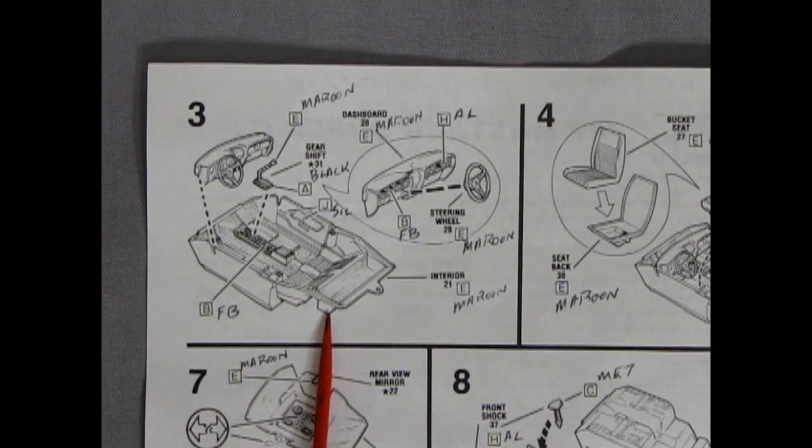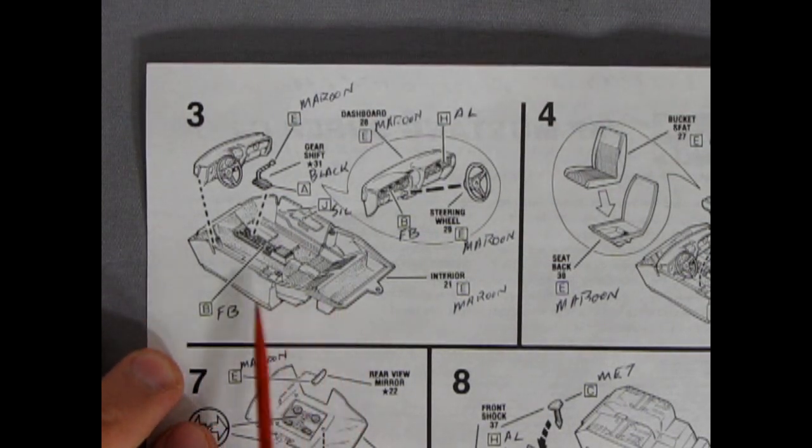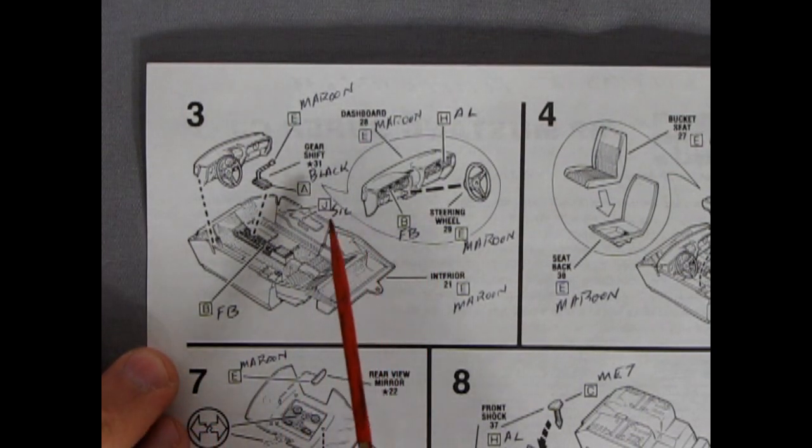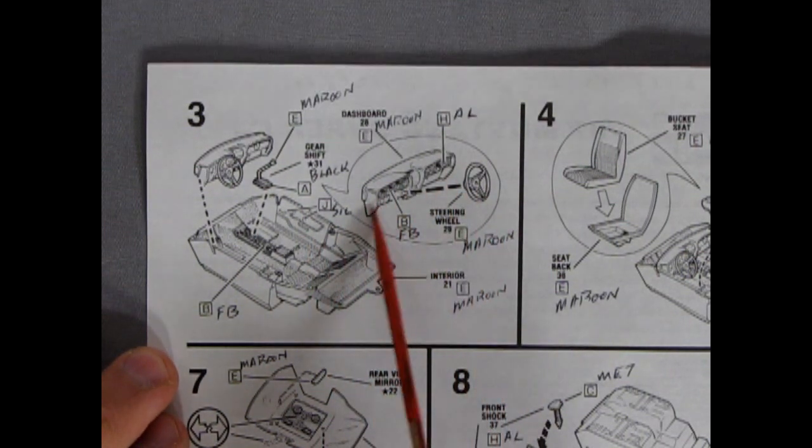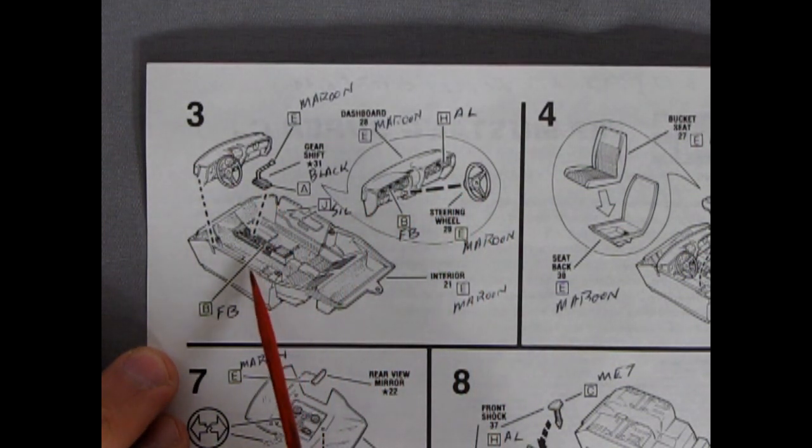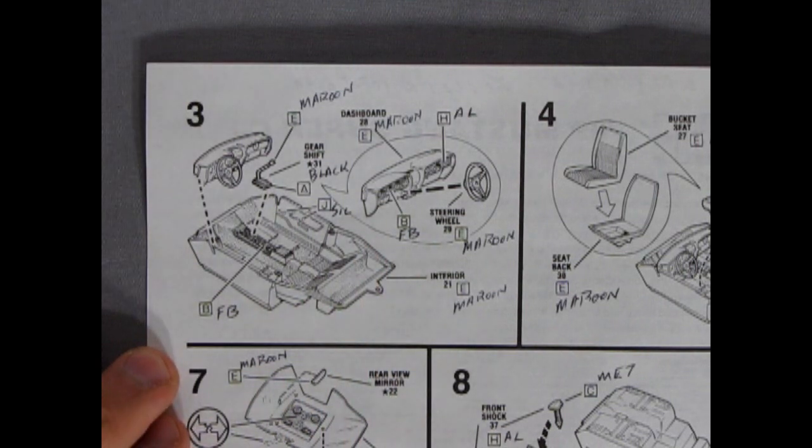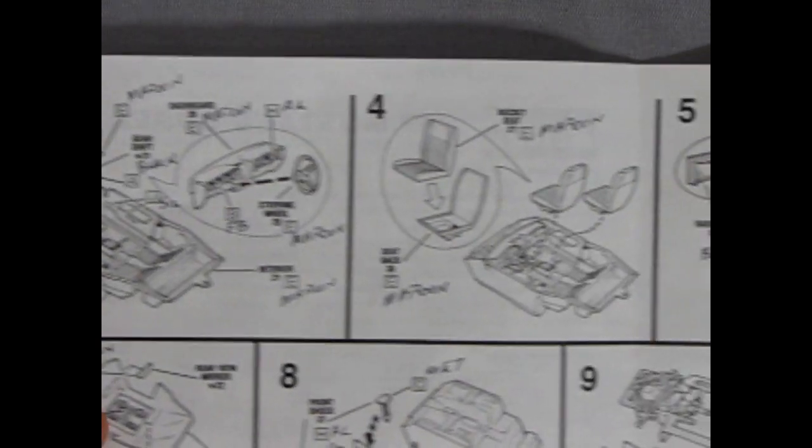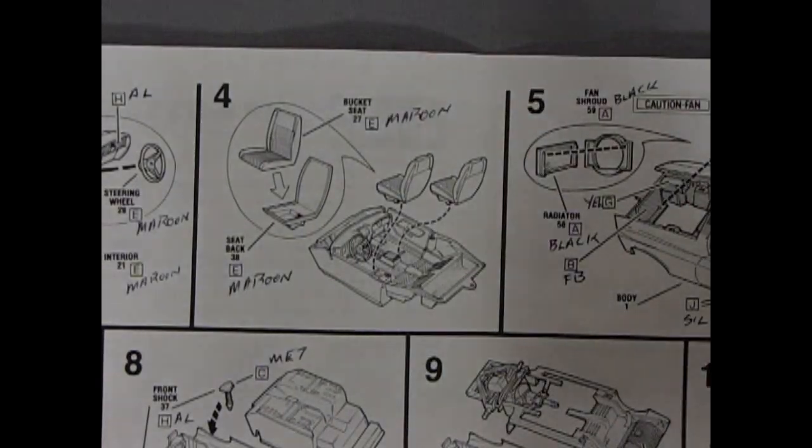And here we have our interior going together. Very much the same interior as our Carroll Shelby Mustang. So there's our dashboard with the steering wheel going on, the gear shift lever going into our tub here, which of course is everything's molded in there including the door panels. Just going to slide this across today.